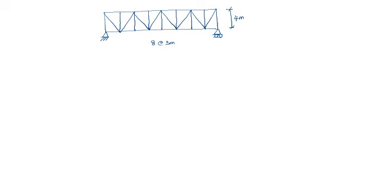Now we need to find ILD for PQ, 4th panel diagonal member. Suppose this angle is theta. In this triangle, theta, so this is 4 meters and this is 3 meters. Obviously this diagonal member height is 5 meters. From this, cos theta equal to 3 by 5 and sin theta equal to 4 by 5.